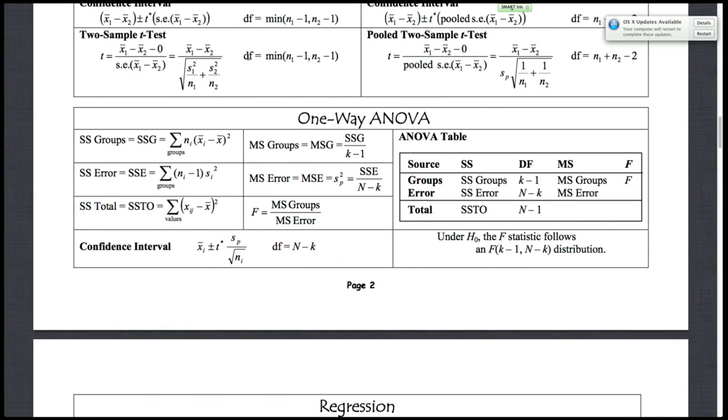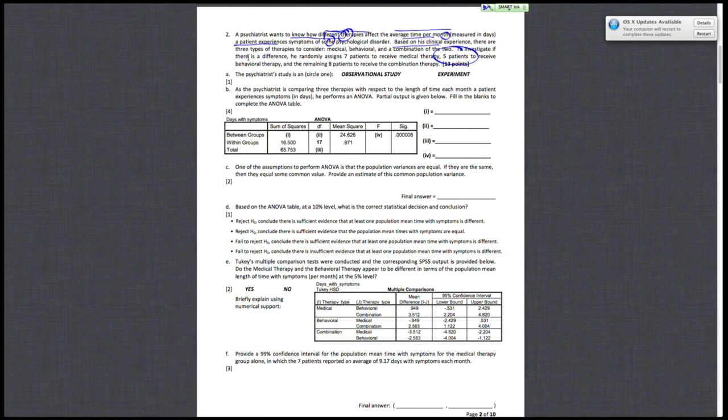We can see if what we're looking for is the between groups sum of squares, that's going to equal the sum of squares total minus the SS error. In other words, the total is the sum of between groups and within groups. So to find the between groups, I just have to do 65.753 minus 16.5, which gives me 49.253.